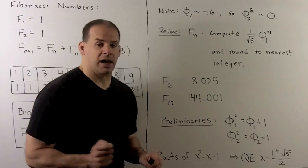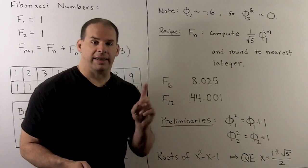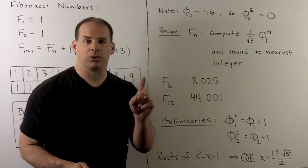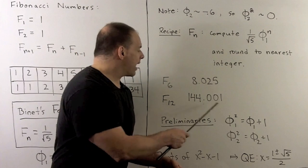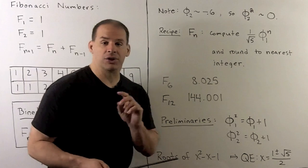For F12, it's not on the list from before. Again, we compute 1 over square root of 5, phi 1 to the 12th. I get 144.01. We round, we get 144, and that's going to check out.